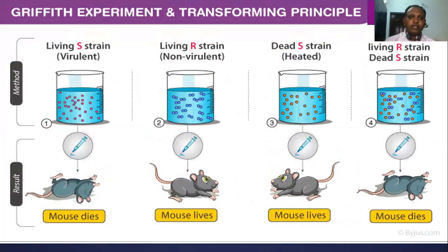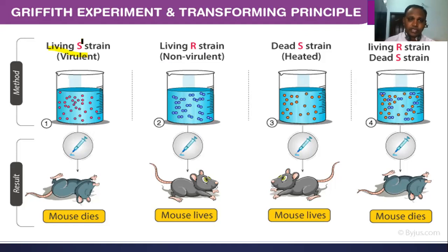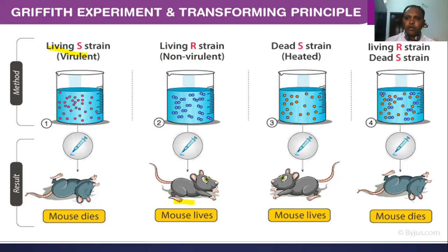Next we discussed Griffith's experiment — the transforming principle and bacterial transformation. He used Streptococcus pneumoniae. He taken live S strain, which is a virulent, capsulated, smooth strain — S3 strain — and injected it into mice; the mice died of pneumonia fever. He also used live R strain, which is rough and non-virulent; when injected into mice, the mice survived because the live R strain does not cause any disease.